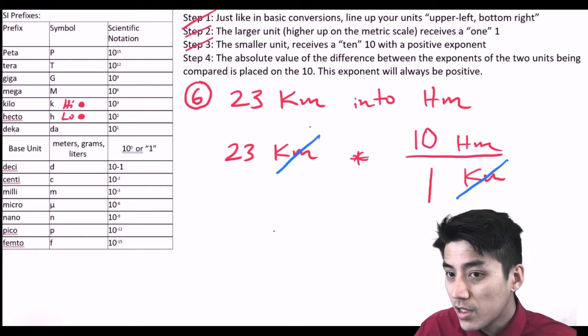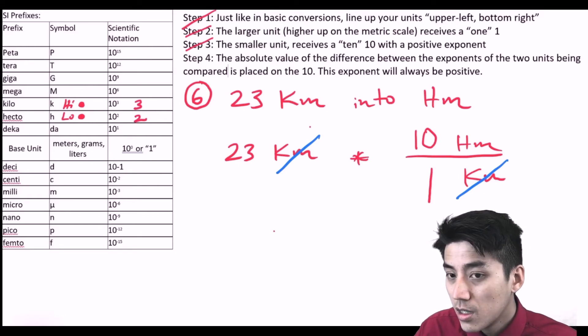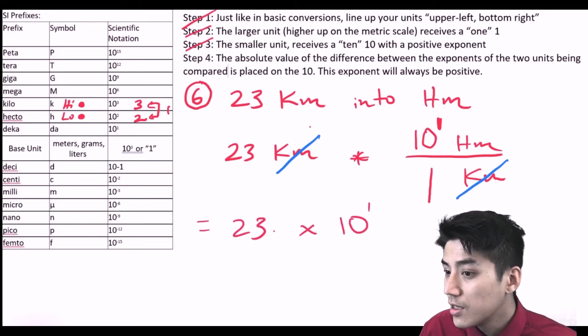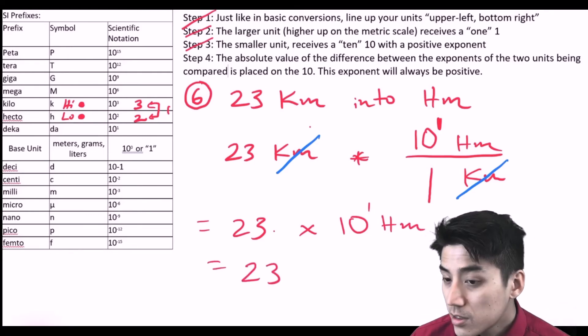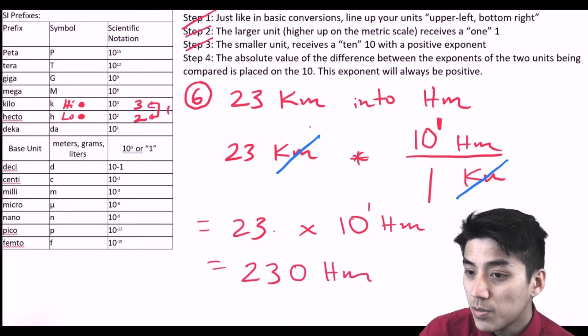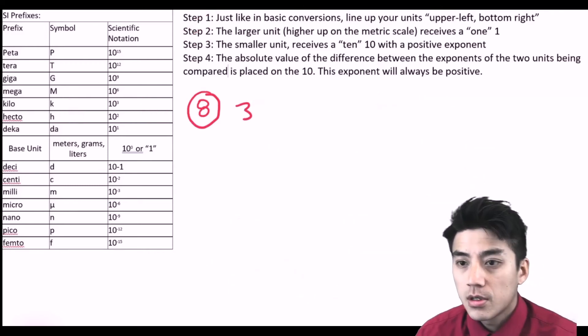Now we just need to figure out what the exponent is. I'm going to look at my scientific notation chart. Kilo has a three, hecto has a two. The distance between them is just one. So I'm going to write a one as the exponent. This one's plain and simple, 23 times 10. 10 to the first is really just 10. Our answer can be rewritten as 230 hectometers. So 23 kilometers is equal to 230 hectometers.